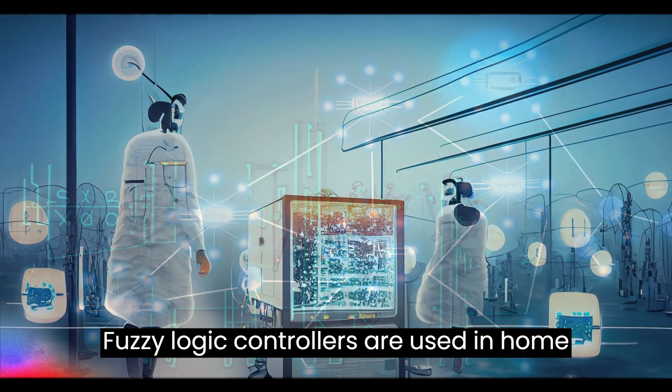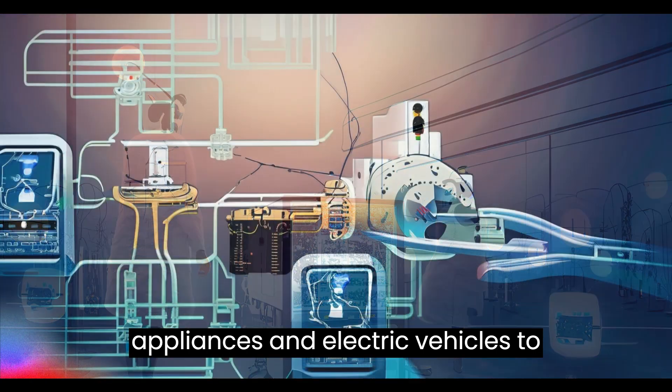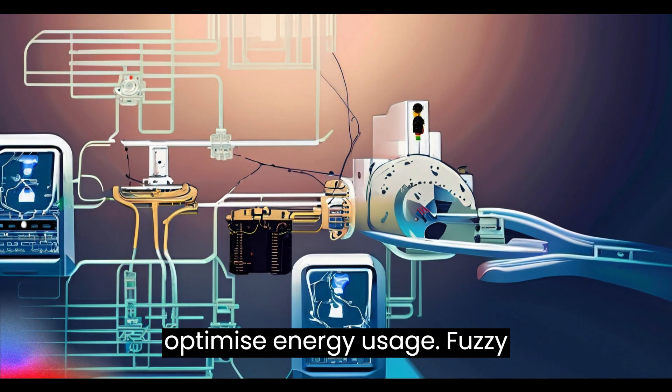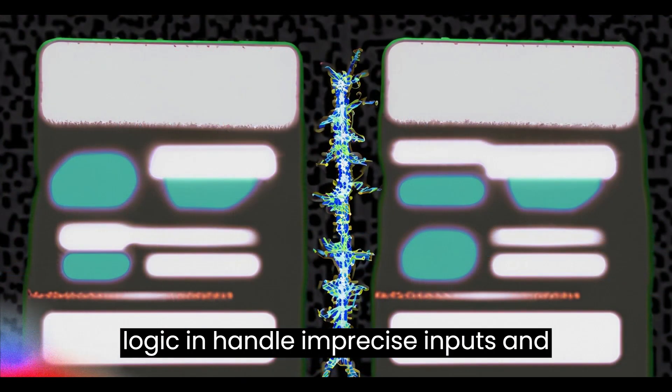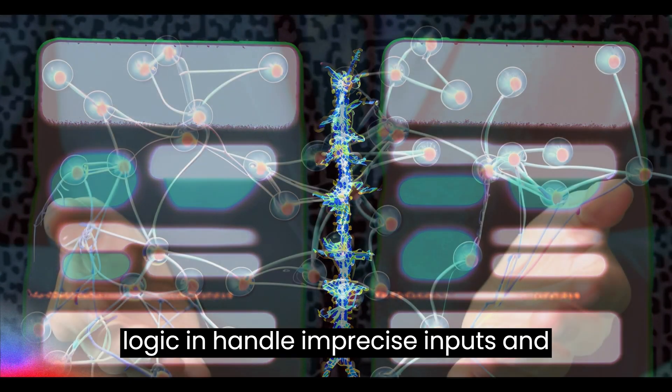Fuzzy logic controllers are used in home appliances and electric vehicles to optimize energy usage. Fuzzy logic can handle imprecise inputs and approximate reasoning.